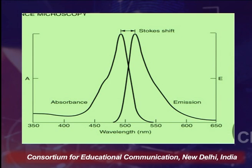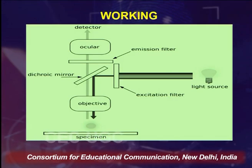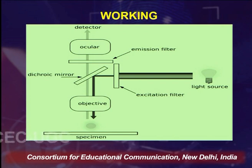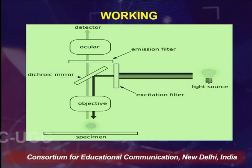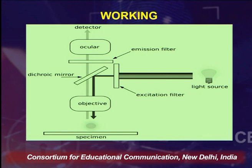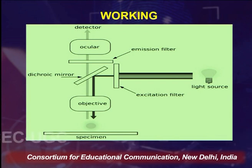Talking about the working of the fluorescence microscope: there is a light source through which light passes through the excitation filter. From the excitation filter the light goes through the dichromic mirror to the objective and from there to the specimen. The specimen, after receiving the light, goes to the excited state, and when it returns to the ground state it emits some light. That emitted light contains fluorescent light, which goes back through the dichromic mirror, then to the ocular and detector. The detector detects that fluorescent light, and its absorption spectra helps identify the substance being examined.